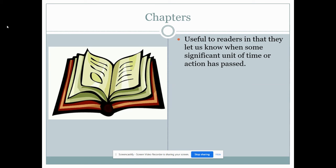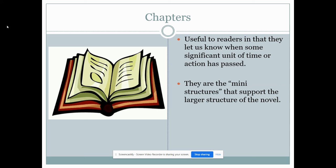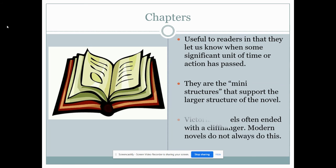Chapters — why are they there? They are useful to readers in that they let you know when some significant unit of time or action has passed. They are little mini-structures within the novel that support the larger structure. In Dubliners it's particularly interesting because each chapter is a little story, so your question should be how does it support the larger structure of the novel as a whole? Victorian novels often ended with cliffhangers because they were published in serial form in cheap newspapers — they wanted you to buy the next chapter. Modern novels do not always do that. Some novels today have no chapters, in which case time or action might be reflected differently.